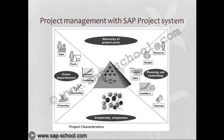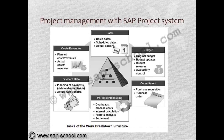We can see the entire life cycle of a project and its characteristics: the complexity and uniqueness across functional departmental hierarchy of project parts, and planning and controlling integrated under the umbrella of project management in SAP PS. The further elementary parts of SAP PS include dates — basic dates, scheduled dates, and confirmed actual dates — as well as budgets, covering the original budget, updates, budget approvals, and availability control.